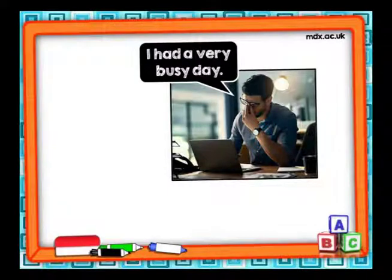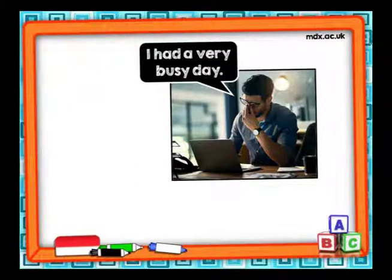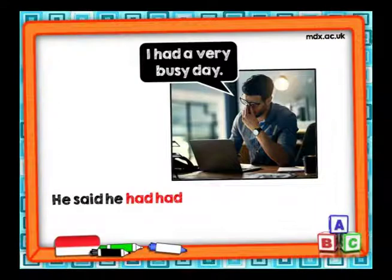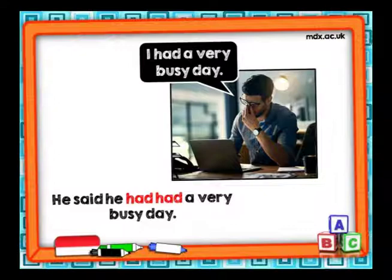Vamos ahora a ver el segundo ejemplo. 'I had a very busy day.' Tuve un día muy ocupado. Vamos a transformar esto a reported speech. Iniciamos con 'He said...' Él dijo que él había tenido... He said he had had a very busy day. Estamos transformando la oración que está en pasado simple a pasado perfecto.